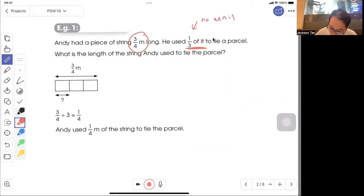This is asking about 1/3 × 3/4. What is the length of the string Andy used to tie the parcel? You can do 1/3 × 3/4, and you get the answer 1/4 meter.